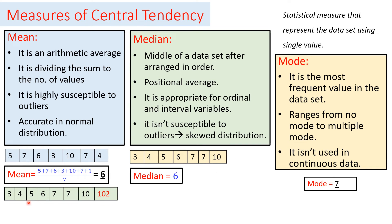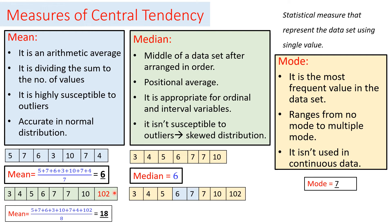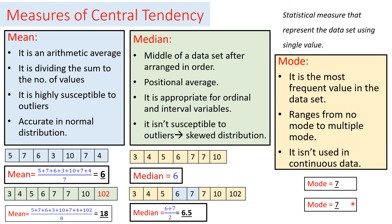Let's take another example. In this new example, we add one extreme value — 102 — to show that the mean is highly affected by extreme values. As you see, the mean becomes 18 due to adding 102. However, the median is now 6.5, the average of the two middle values 6 and 7, showing that it is not highly affected by the addition of extreme values. The mode remains 7, repeated two times.